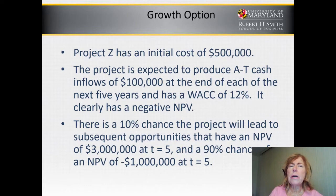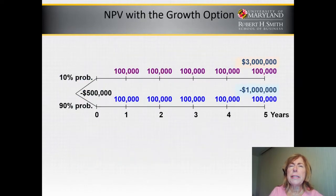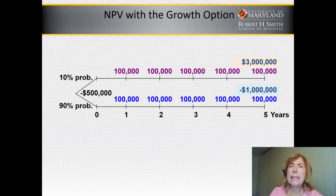Should we do the project? Well, first we'll draw the decision tree, with the $100,000 yearly cash flows under both scenarios. Then add the $3 million at year five — remember there's a 10% probability of that scenario — and include the negative $1 million at year five for the 90% probability scenario on the bottom branch.